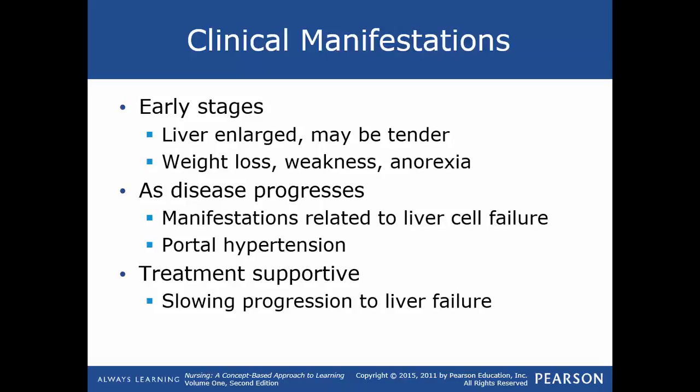Portal hypertension causes ascites, peripheral edema, anemia, decreased white blood cells, and decreased platelet counts. Treatment is supportive and directed at slowing the progression of liver failure and reducing complications. Medications help regulate protein and fluid metabolism, maintain fluid and electrolyte balance, and provide supportive therapies. They also aim to treat malnutrition, anemia, bleeding tendencies, encephalopathy, renal failure, and infections.